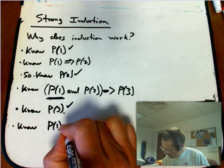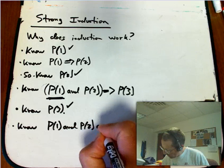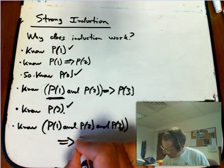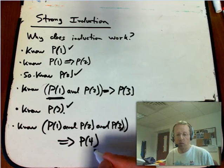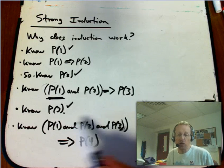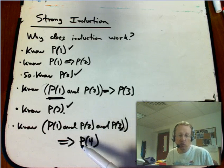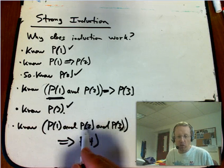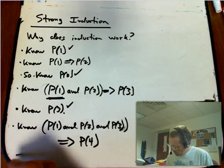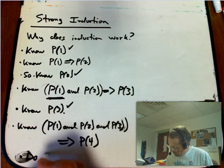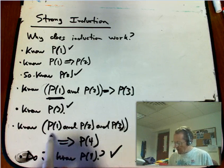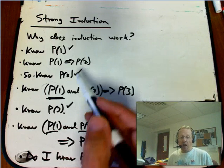What if all I know is that I can prove case 4 of the statement with the help of knowing P(1) and P(2) and P(3)? That's a weaker thing to assume that I can do. I'm not forced to ignore the truth of P(1) and P(2) and only work with P(3) being true. I'm allowed to use all of these statements to get to P(4). Well, do I know P(4)? Absolutely. Because I can assume P(1), P(2), and P(3). And that gets me to P(4).